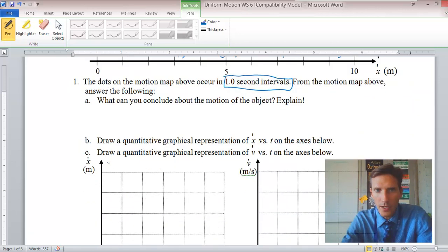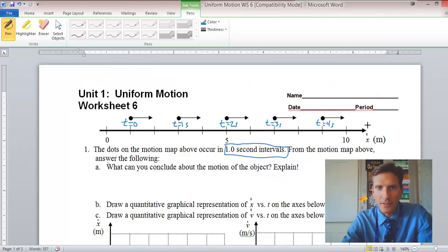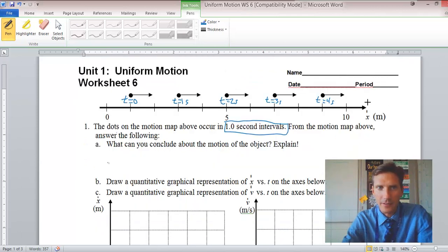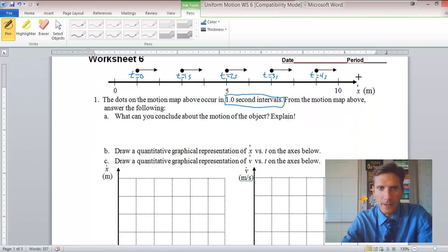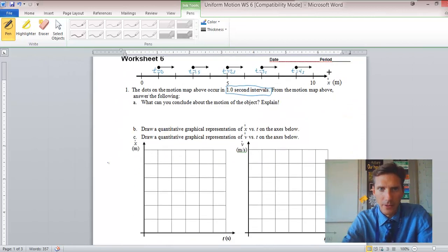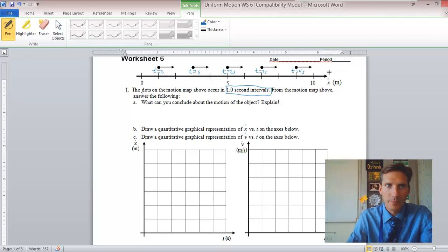Draw a quantitative graphical representation of X versus T on the axis below. So I'm just going to zoom in here so we can see a little better what number we're going to need to go up to. So this is position, and that means that we're going to have to look to see what is the initial position. So we can put here X at time zero equals one. Because if this is zero here, this is one next to it, and it goes all the way up to five, all the way up to ten.